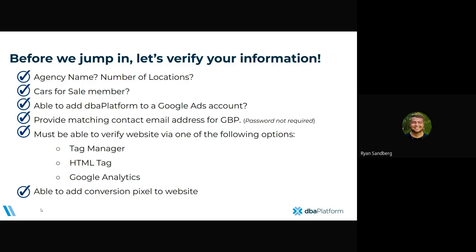For the Google Business page portion, we just need the email contact that has access to the Google Business page. All we need is the email address — password is not required. The next step is you have to be able to verify a website via one of the following options: we do recommend HTML tag as that is the simplest and easiest process, but you can also use Tag Manager or Analytics. And then the last thing is being able to add a conversion pixel to the website — basically just adding code to the website and making sure you can do that for your client.